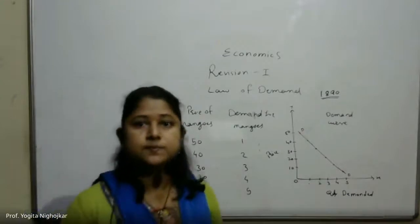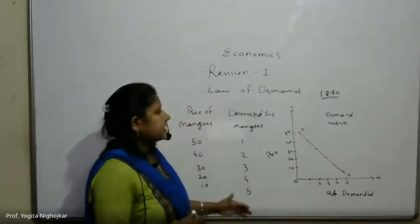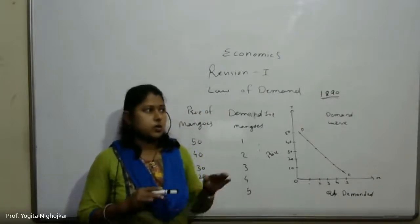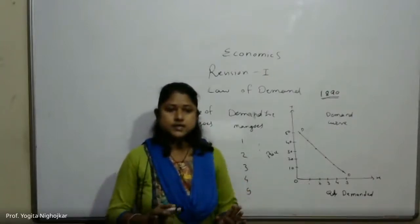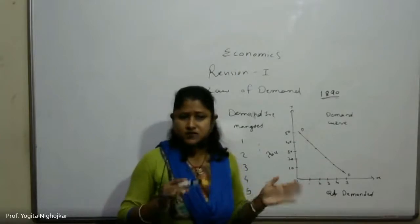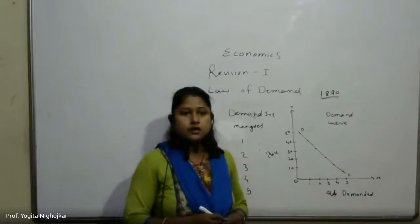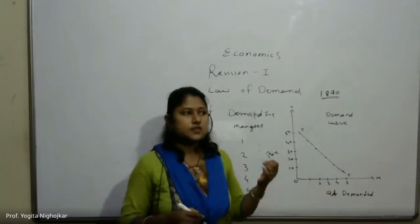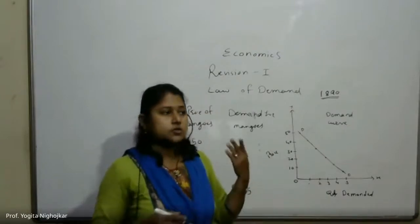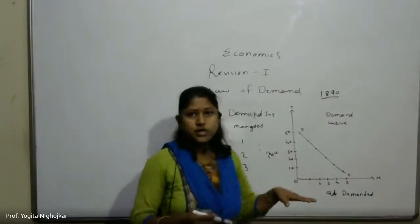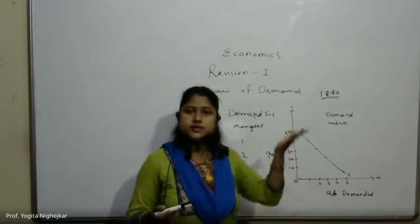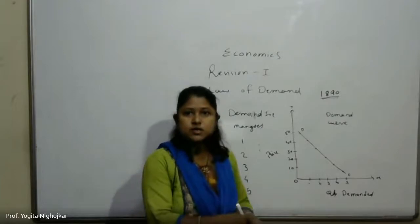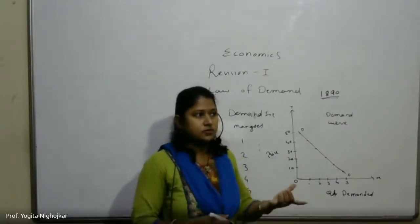There is an inverse relationship between price and quantity demanded. Some exceptions exist. First is Giffen's paradox — inferior or low quality goods are those whose demand does not rise even if their price falls. Giffen's goods are inferior goods. Whether the price of inferior goods increases or decreases, the demand remains the same — for example, salt, which is essential, so its demand stays constant regardless of price change. Giffen goods have a direct relationship between price and quantity demanded.